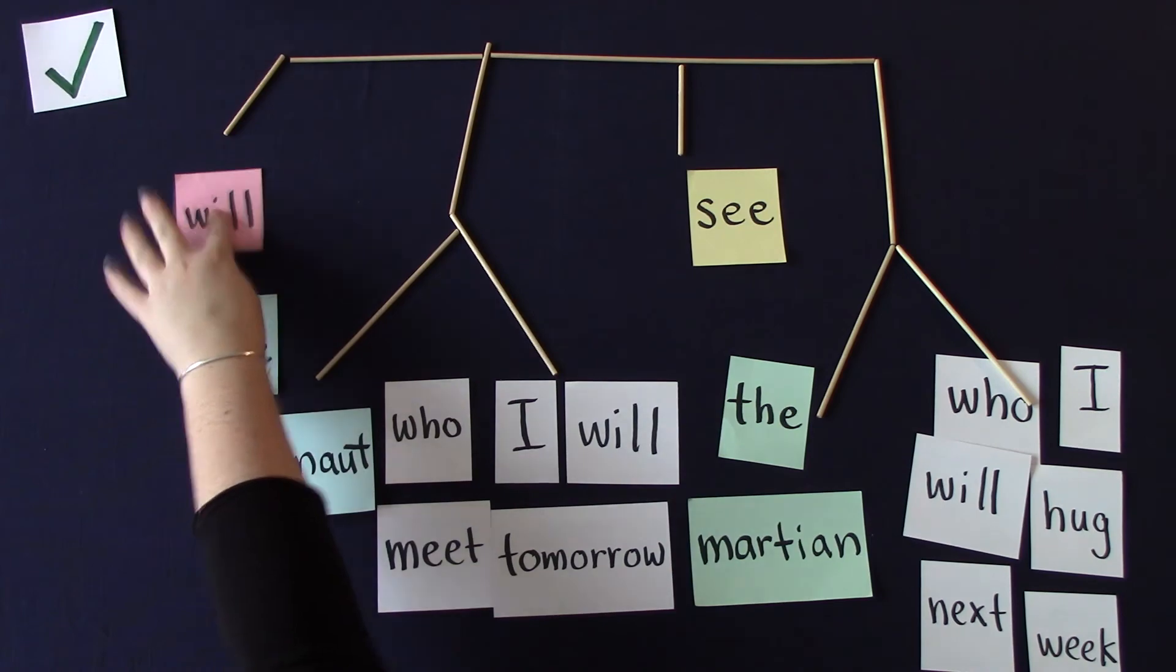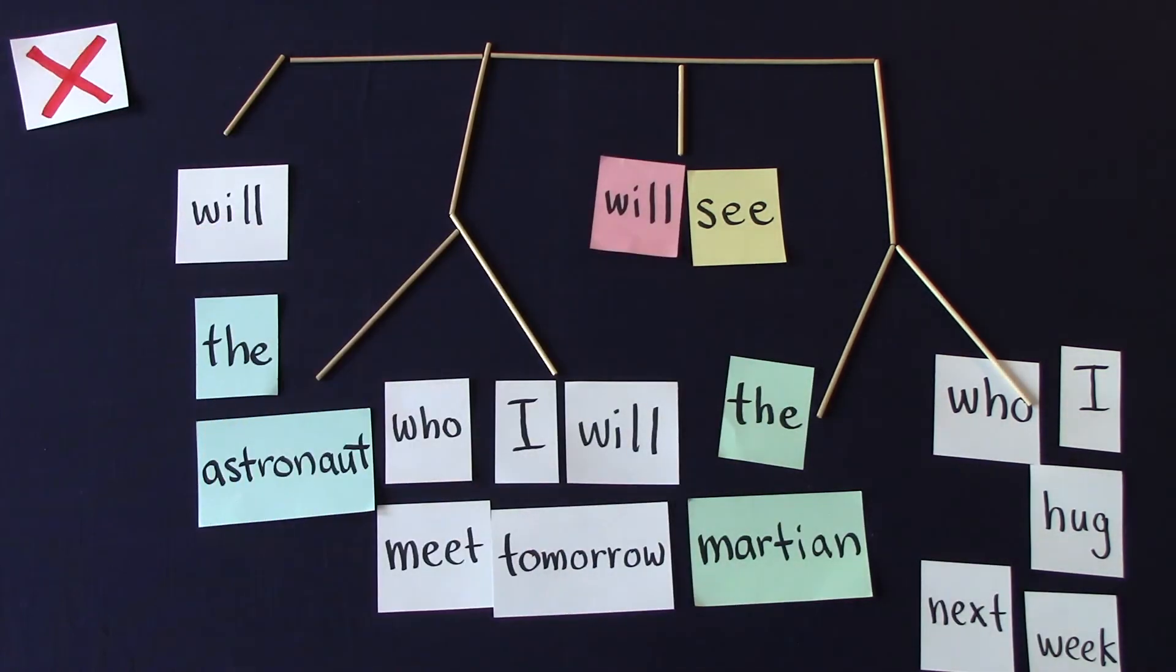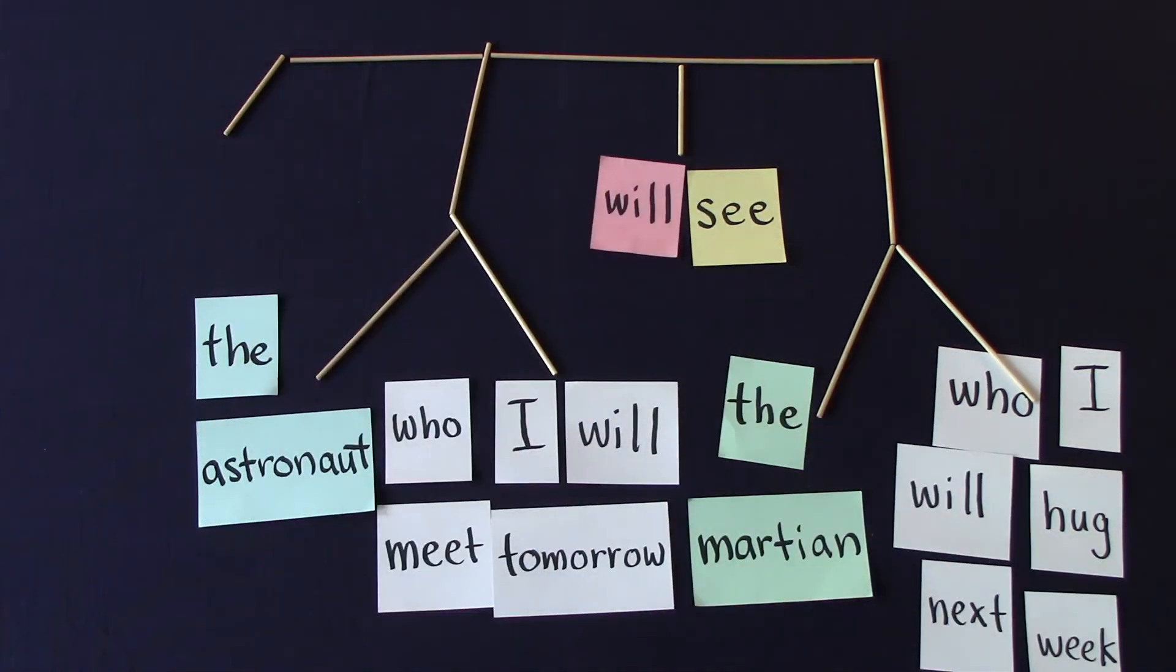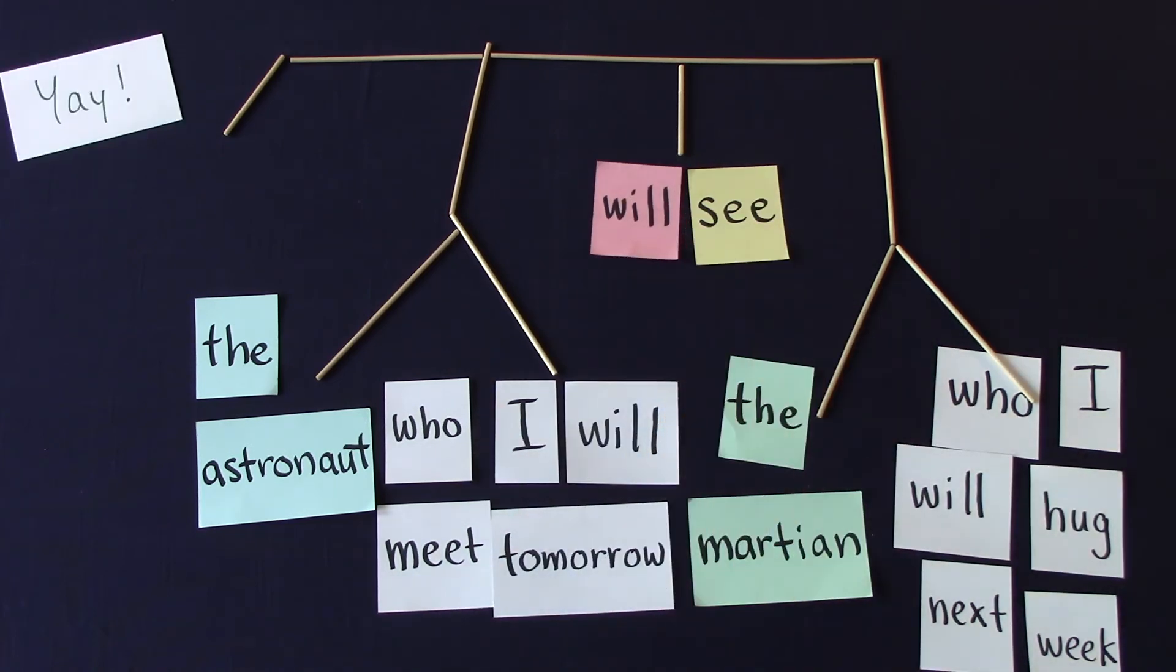No to will one, yes to will two, and no to will three. In other words, we don't move the lower down wills, only the will that's attached to the main structure.